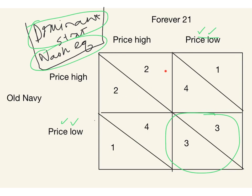Why isn't price high/price high the equilibrium? We see that's a better outcome for both — they each get their second best instead of their third best. But given that Old Navy is pricing high, does Forever 21 want to change its action and price low? Yes, it does — so that rules it out. Similarly, at the outcome where Old Navy prices low and Forever 21 prices high, Forever 21 would want to change since three is better than four. You only need to find one player wanting to change its action to rule out a Nash equilibrium.